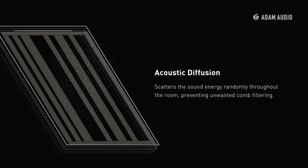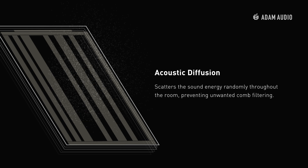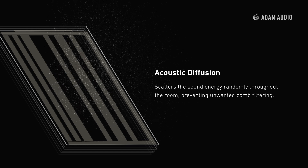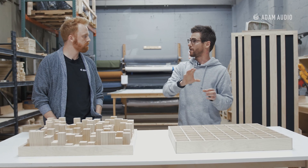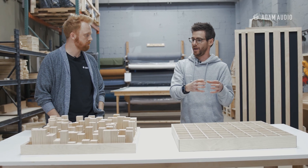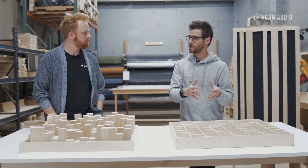As sound waves hit a diffuser they get broken up and reflected more evenly throughout the room, as opposed to bouncing off a wall and reflecting back with a ton of energy at one pinpointed spot or location. So it's just a way to change how a room sounds to make it more natural and more pleasing without necessarily losing all the energy that you might otherwise lose if you used an acoustic panel.